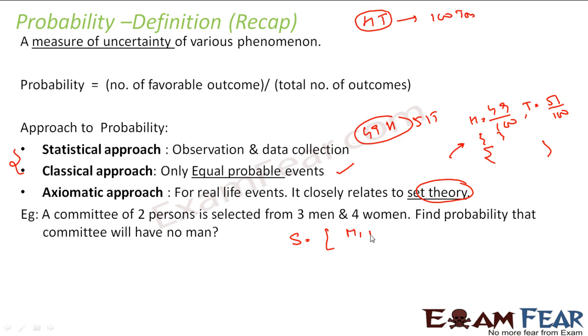We say man one, man two can be selected, man one, man three can be selected, or woman one, woman two can be selected, man one, woman three - all the possible scenarios we write here, and then we write the scenarios where there is no men.